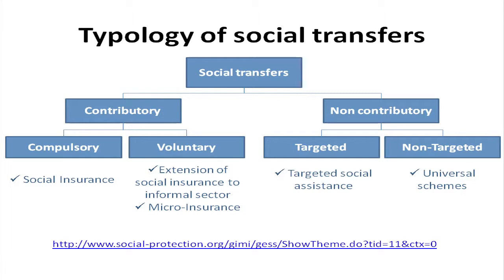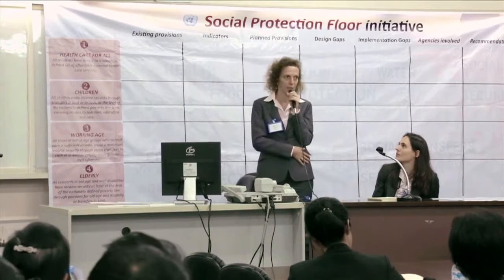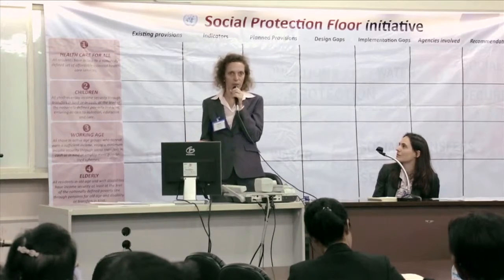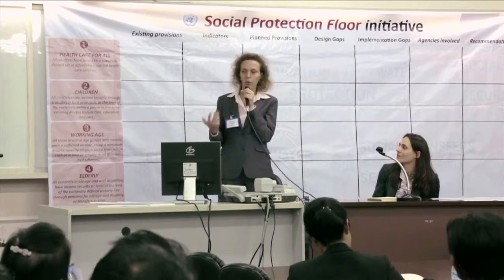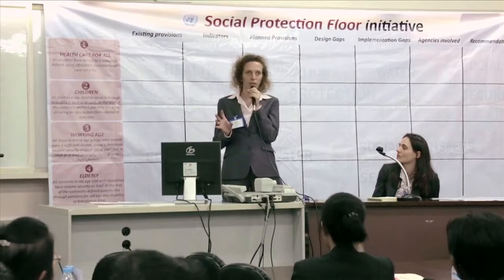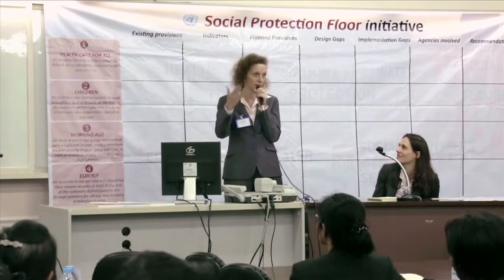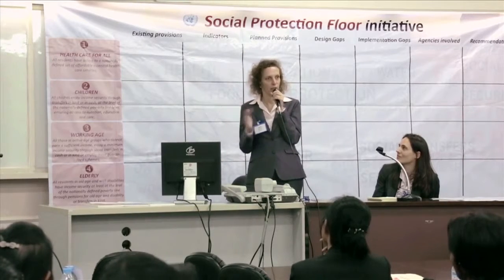Under non-contributory schemes, you may have targeted or non-targeted schemes. Targeted means focusing only on certain groups — usually the most vulnerable. This can be conditional cash transfers or targeted access to healthcare, such as the Jaminan Kesehatan Masyarakat (Jamkesmas) scheme in Indonesia targeting the poor. Non-targeted means universal schemes covering the informal sector regardless of income. You can also have categorical schemes — for instance, all persons above 60 years of age receive a minimum pension.